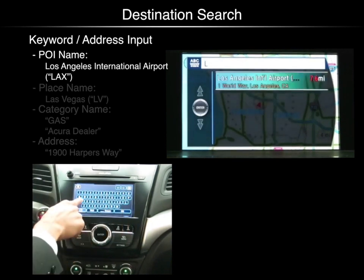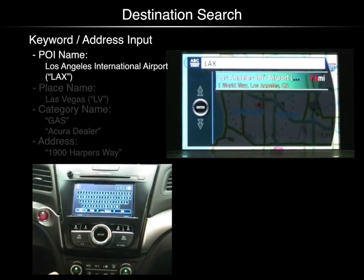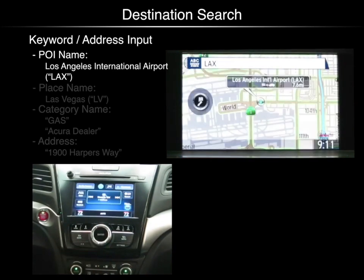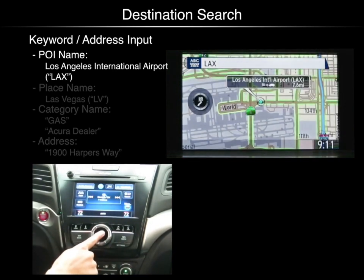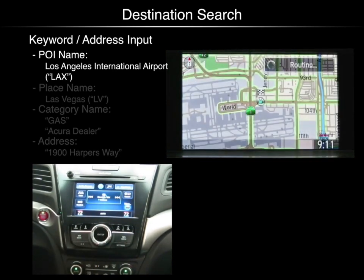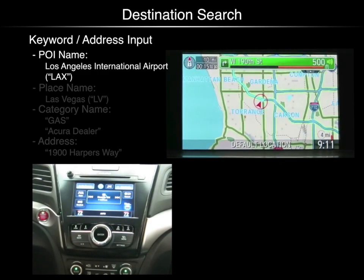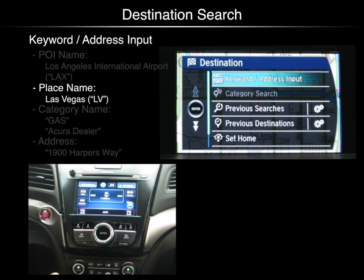Use the keypad to input a keyword. You can only use the keypad when the vehicle is stopped. When the keyword appears on the list, select it by pushing enter twice. The destination is set, and the route guidance begins.